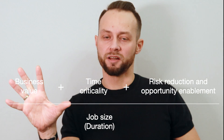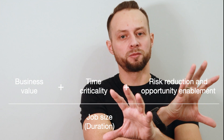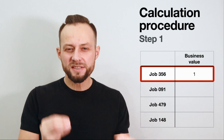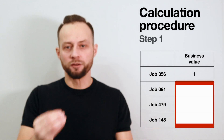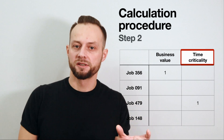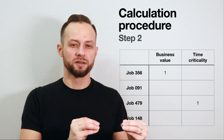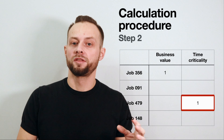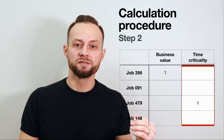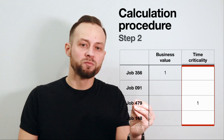Step one: start by evaluating only the first term — business value. Choose the least valuable job in the list, set it to one, then estimate other jobs relative to one — how much more valuable are they — filling all cells in that first column. Step two: go to the next column — time criticality. Choose the least time-critical job, set it to one, then estimate other jobs relative to this one — how much more time critical are they.